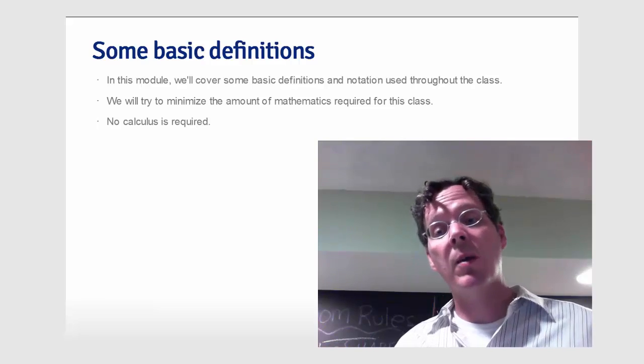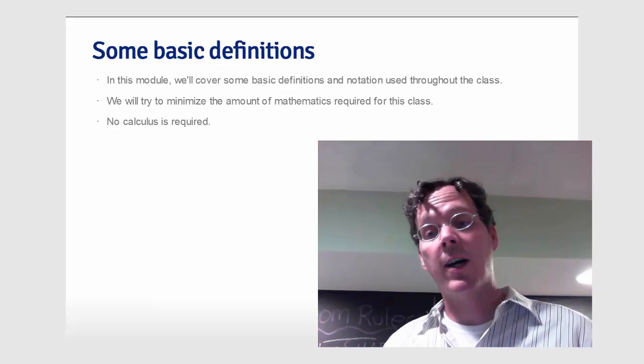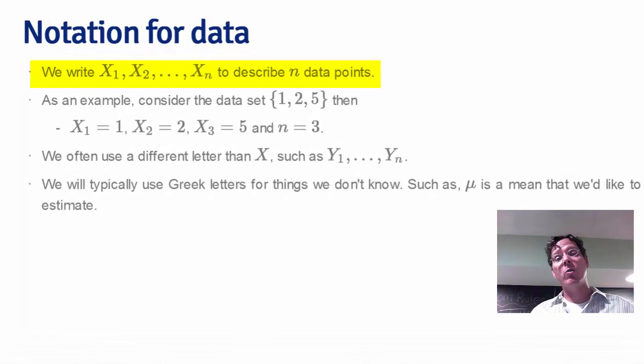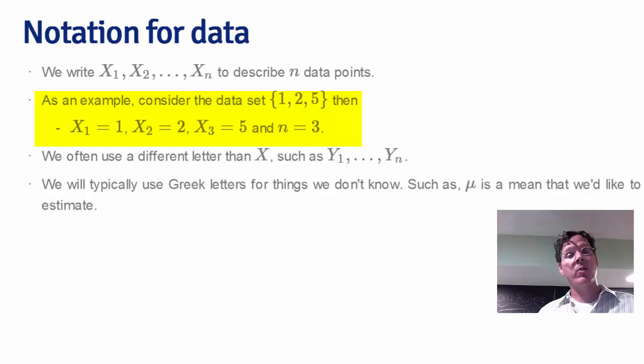Okay, so let's go over some of the important notation relevant for this class. The biggest bit of notation that you're going to have to get used to is to index a variable with a set of subscripts to denote an ordered collection. So we might write X₁, X₂ up to Xₙ to describe n data points. So as an example, consider the data set 1, 2, 5. Then X₁ is 1, X₂ is 2, X₃ is 5, and n in this case is 3.